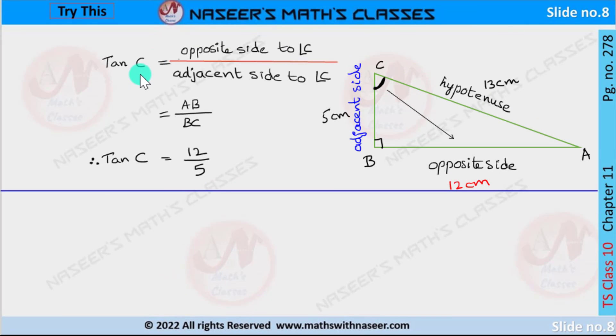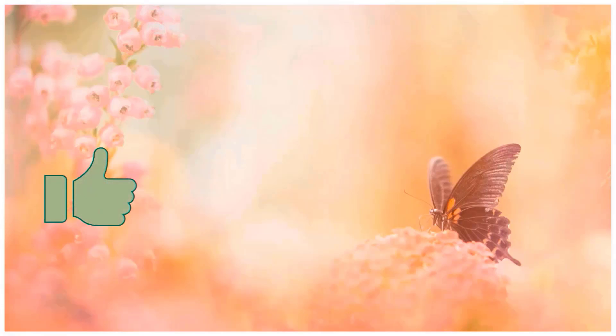Tan C is equal to ratio between opposite side to angle C by adjacent side to the angle C here. Opposite side is AB and adjacent side is BC. Now substitute these values, then we get tan C is equal to 12 by 5.